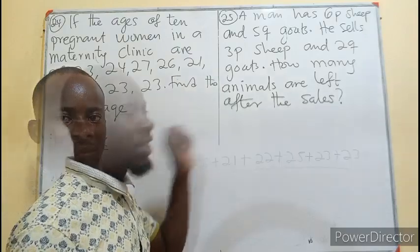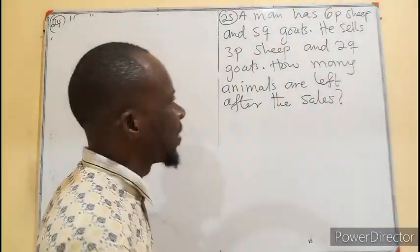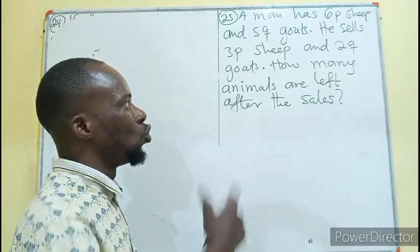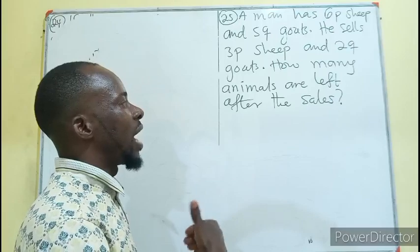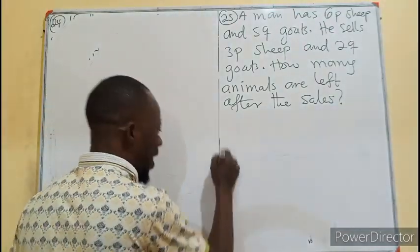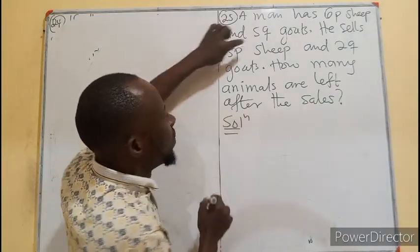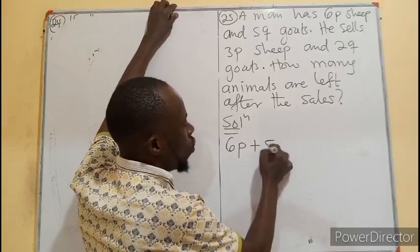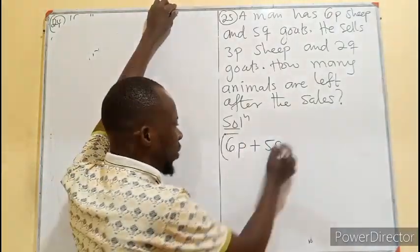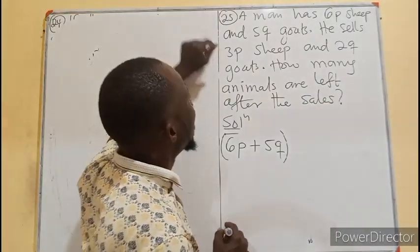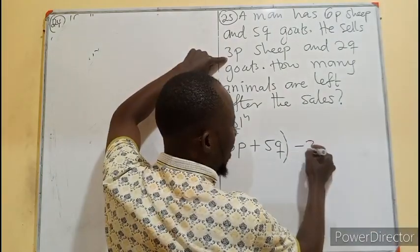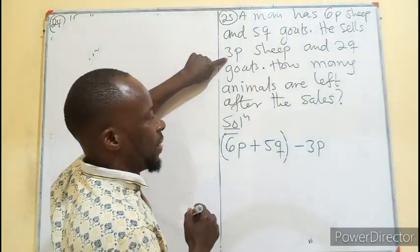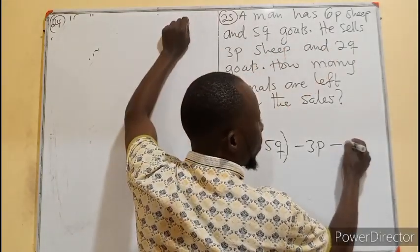Question 25: A man has 6p sheep and 5q goats. He sells 3p of the sheep and 2q of the goats. How many animals are left after the sales? The total animals are 6p sheep plus 5q goats. We subtract 3p sheep and 2q goats.